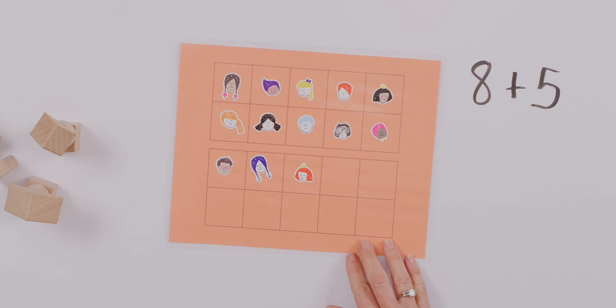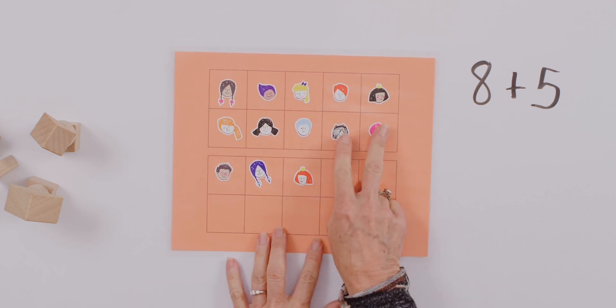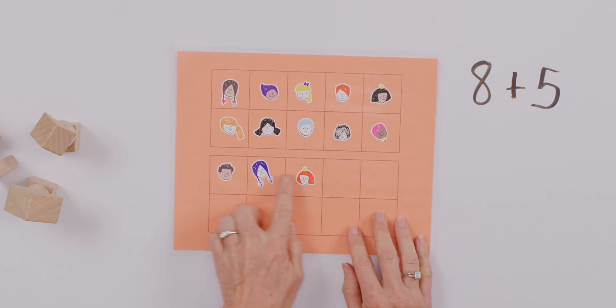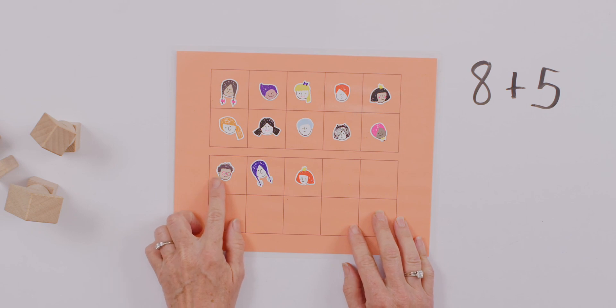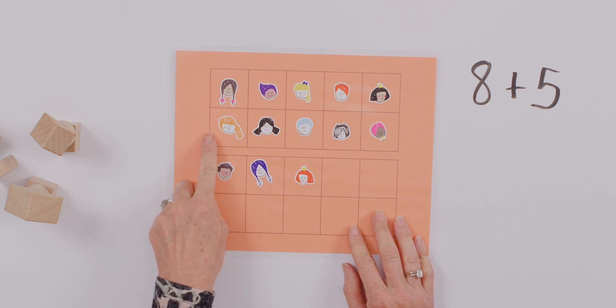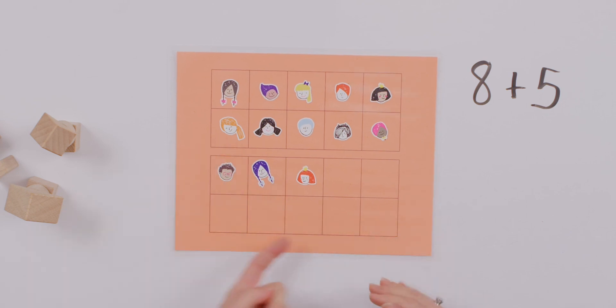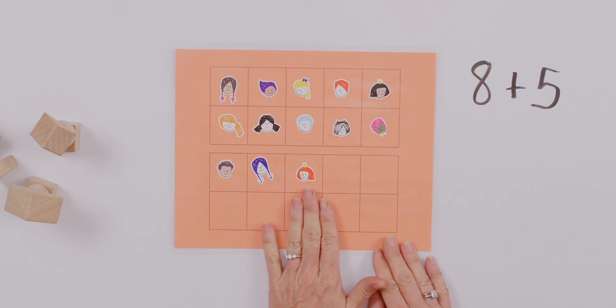When you were visualizing, could you see that we needed two more to make our ten and that we would have three more on this side? And this helps us see that eight plus five is equal to ten plus three, and that gives us thirteen.